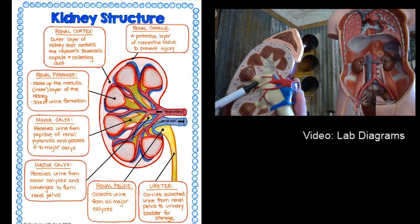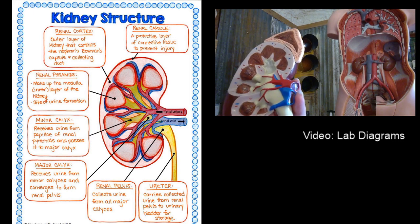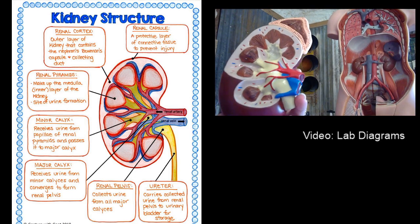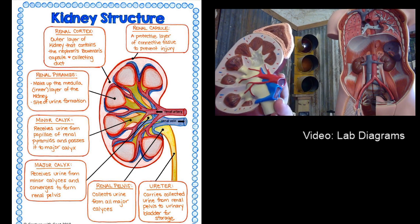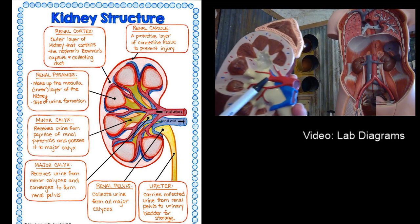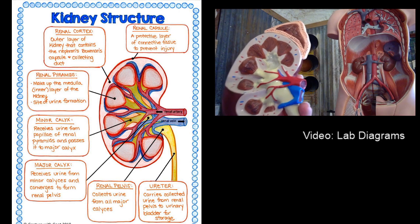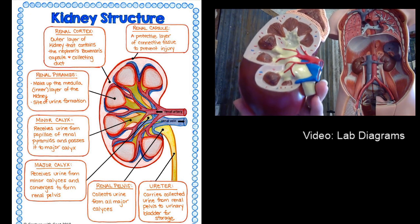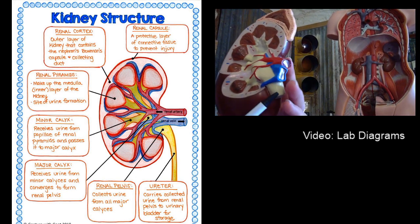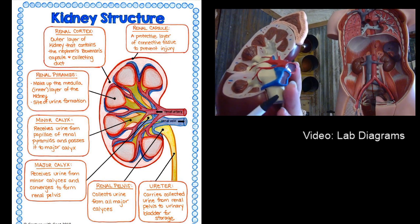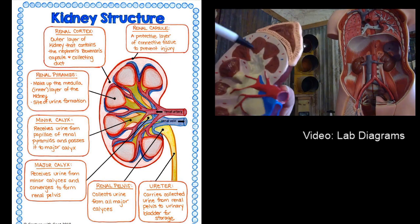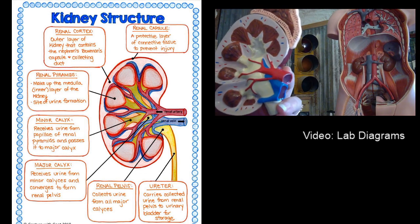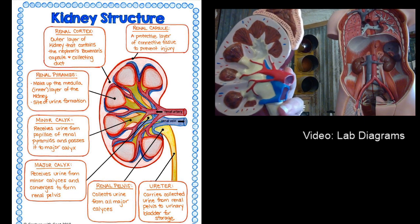Each pyramid has its own minor calyx, and they join together to form the major calyx — that's the next box. It receives urine from the minor calyces (calyces is the plural of calyx) and converges to form the renal pelvis. The renal pelvis — shown as the yellow part — is the bottom middle square, and it collects urine from all the major calyces. From there, the ureter carries collected urine from the renal pelvis to the urinary bladder for storage.